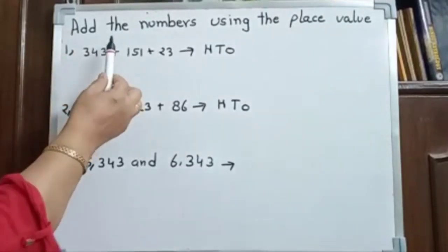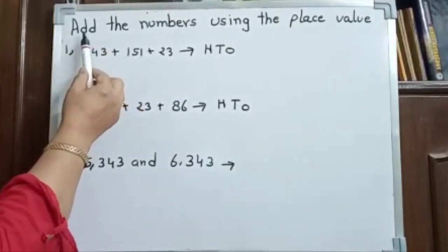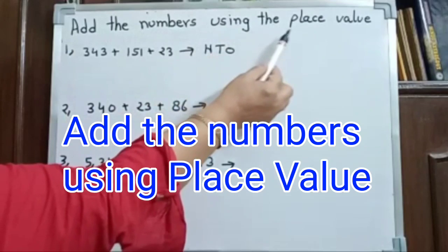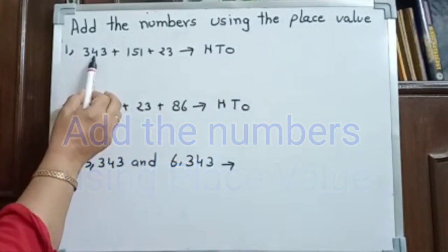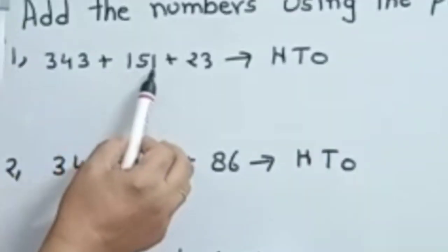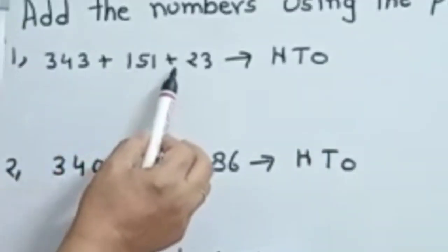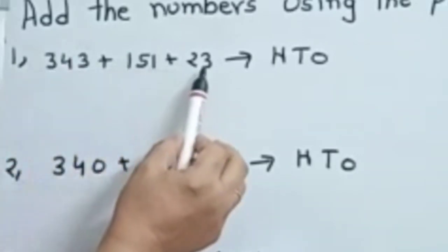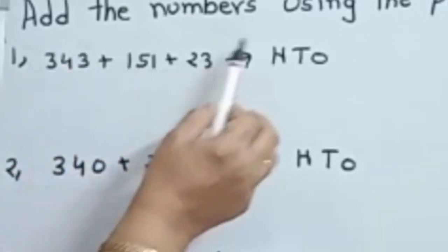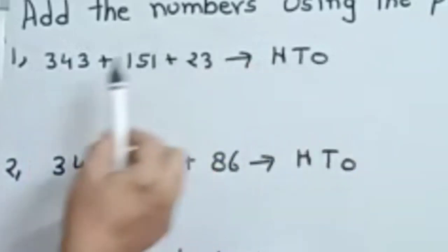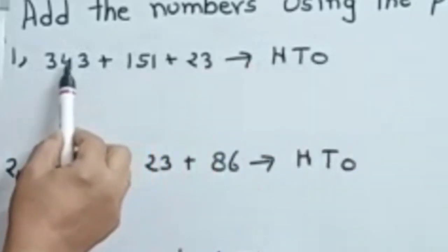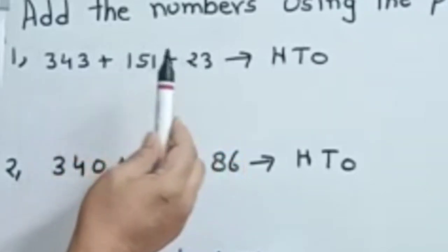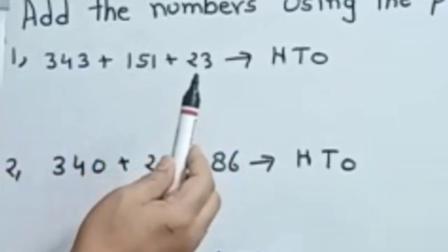Hello students. Now here we have another video. Add the numbers using the place value. We have 343 plus 151 plus 23. We have to add all these digits under place value: ones, tens, hundreds.